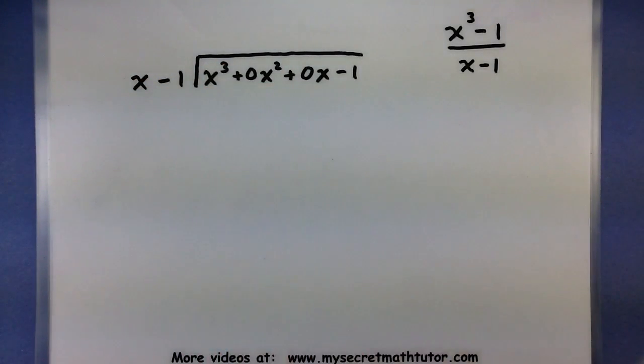Divided by x - 1. So if you're missing any powers of x, make sure you put in those placeholders for the missing powers. Now let's continue through the problem.